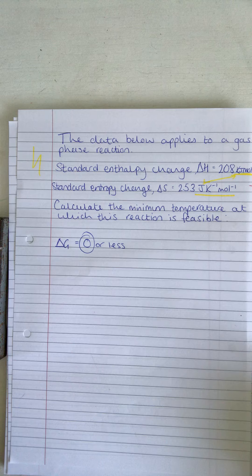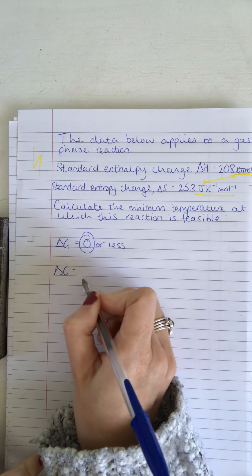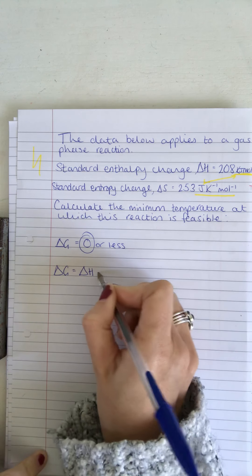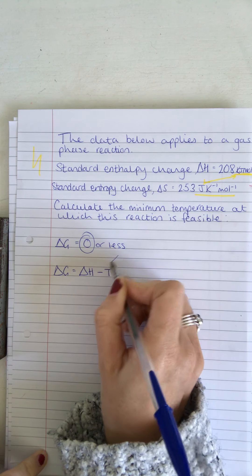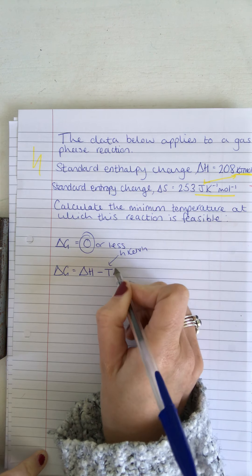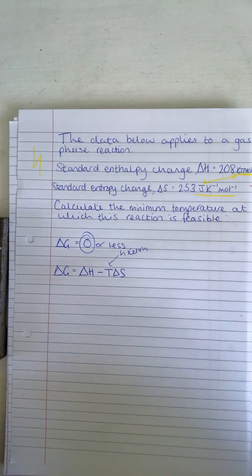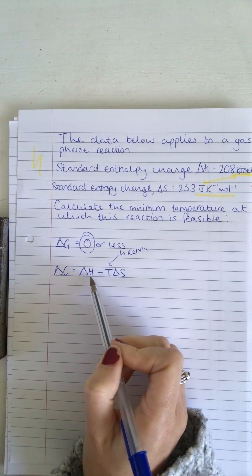Okay, so if I just put the Gibbs free energy equation: Delta G equals Delta H minus temperature in Kelvin times the change in entropy.